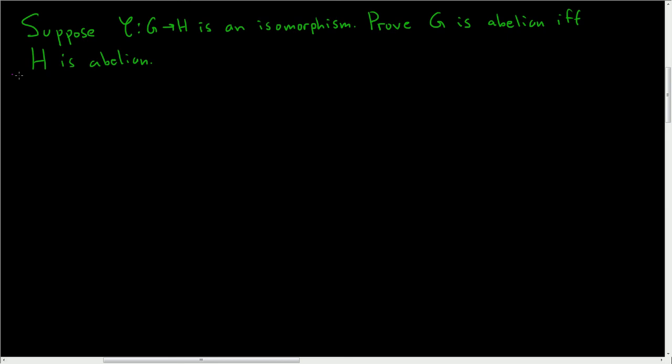So we have a group homomorphism that's actually an isomorphism. That means it's bijective, so it's one-to-one and onto. And we're being asked to prove that G is abelian if and only if H is abelian. In other words, if you have two groups and they're isomorphic, if one is abelian then so is the other. So that's basically what we're proving in this problem.